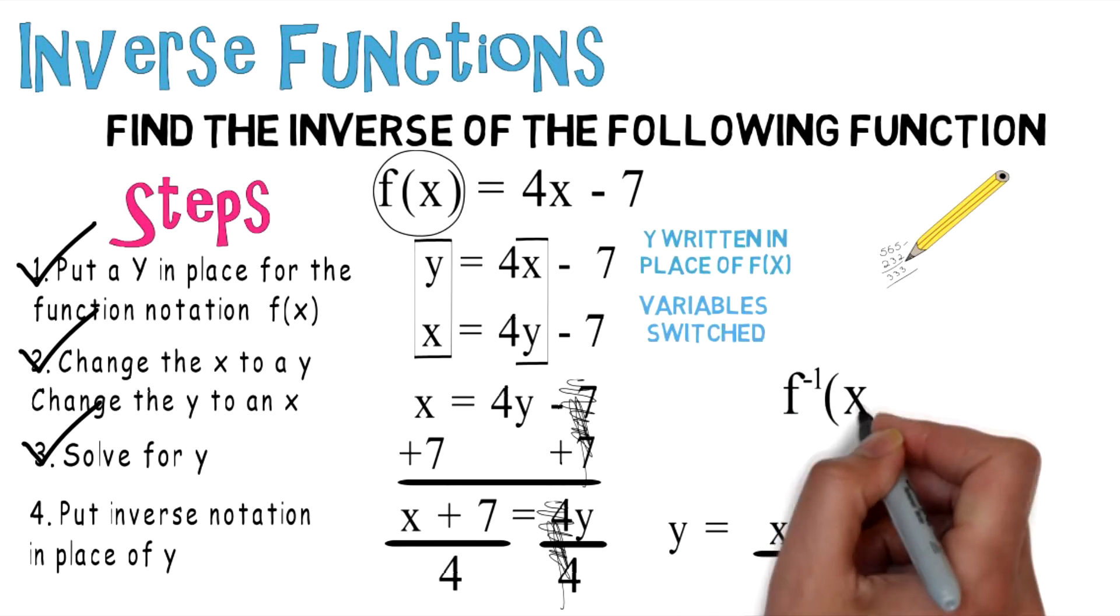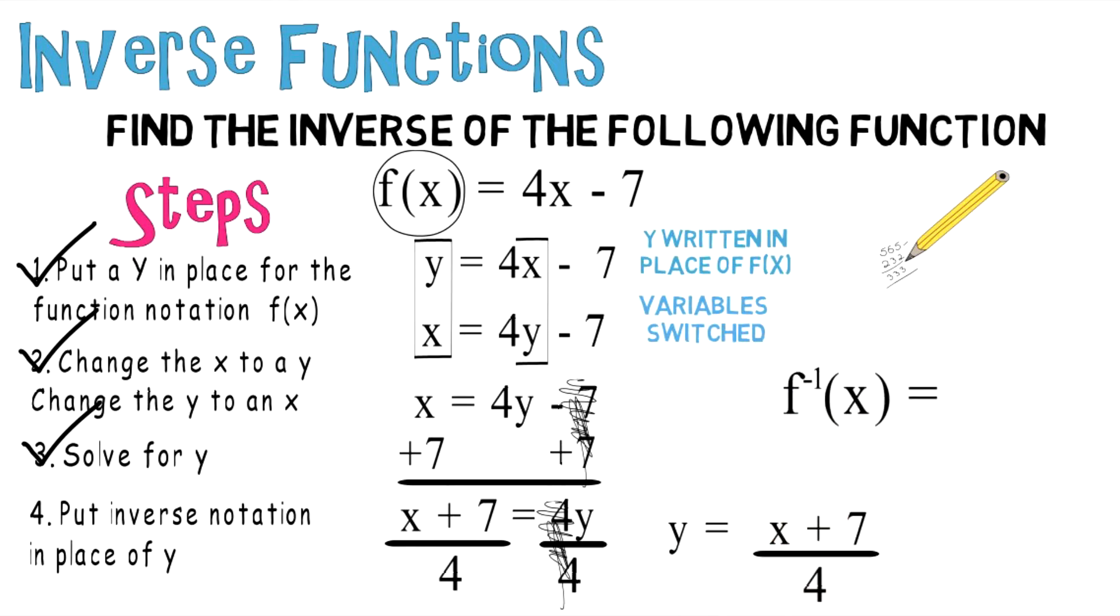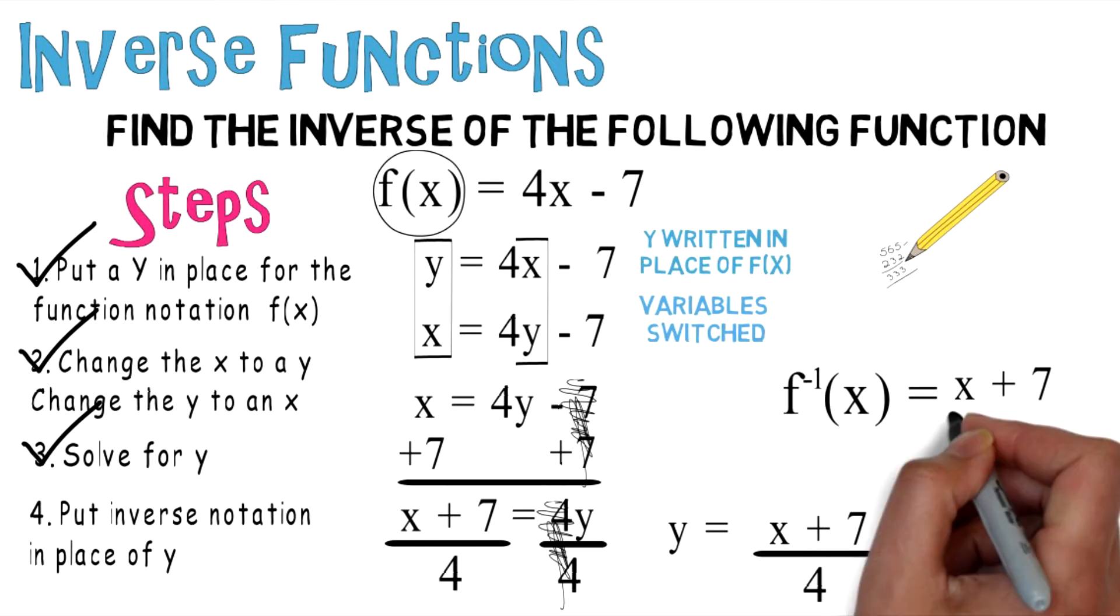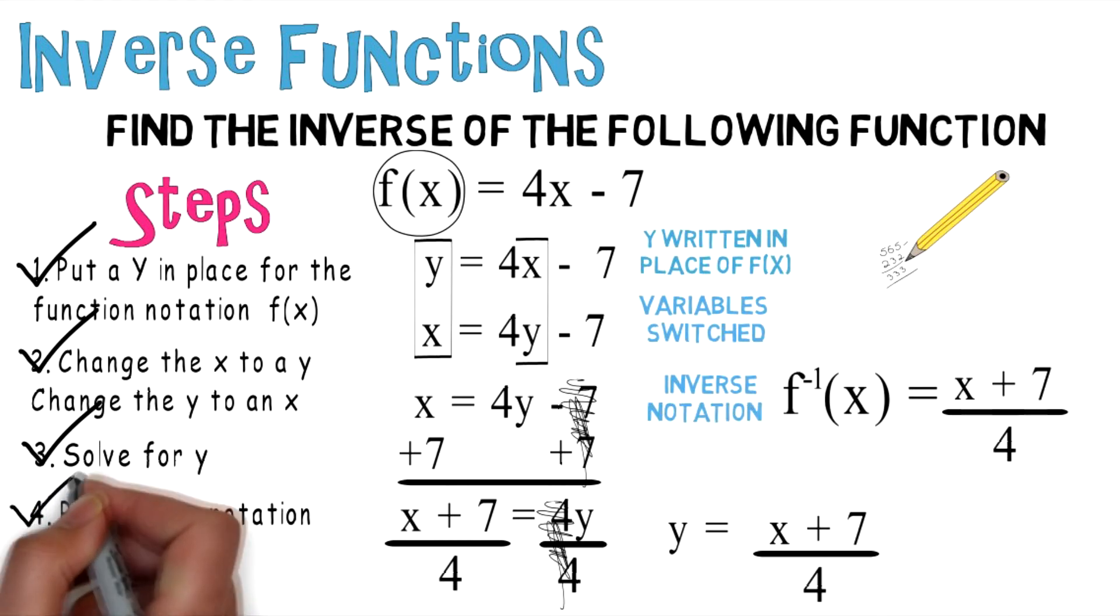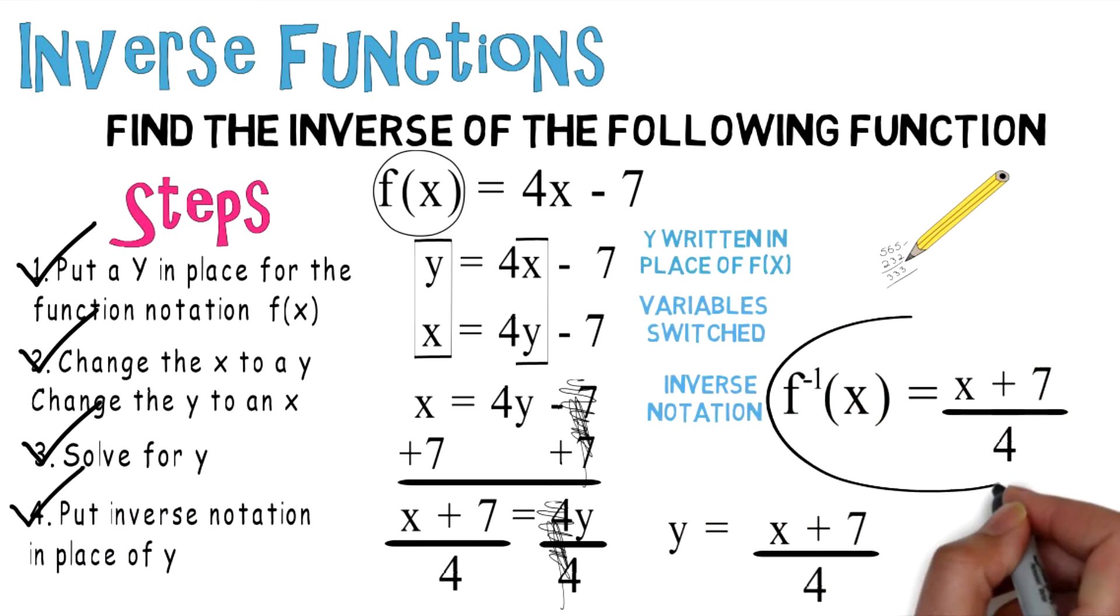Therefore, we're going to add f^(-1)(x) = (x + 7) divided by 4, and this f^(-1) is your inverse notation. So we can cross off the last step, and this is what you ultimately wind up with: the inverse is f^(-1)(x) = (x + 7) divided by 4.